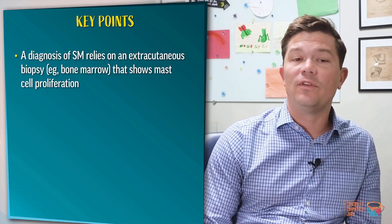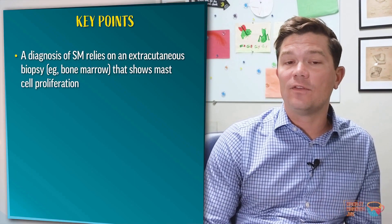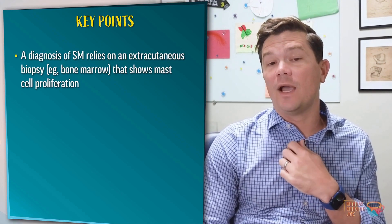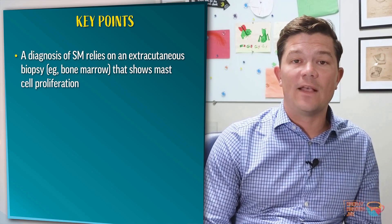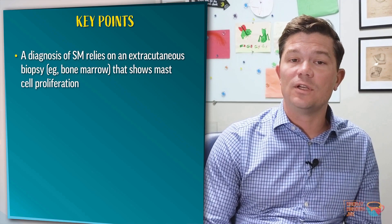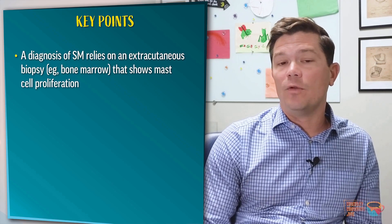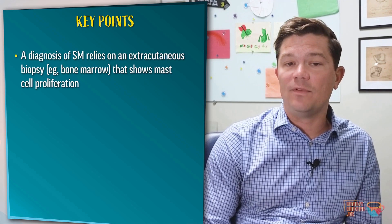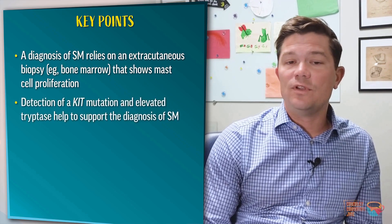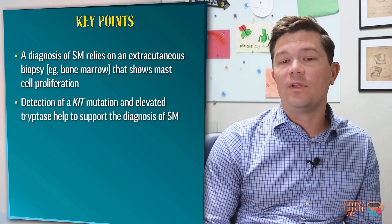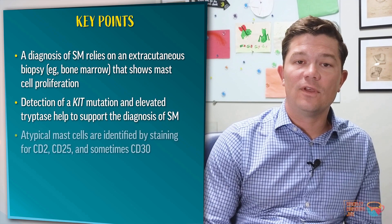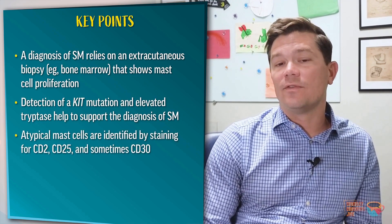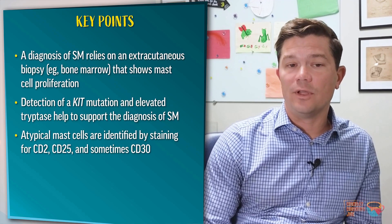Some take-home points: a diagnosis of mastocytosis relies on bone marrow biopsy — or at least a biopsy of an extracutaneous organ showing mast cell proliferation. Bone marrow is the most common site biopsied, but a GI biopsy could work as well. Detection of a KIT mutation and elevated tryptase help to support this diagnosis, and atypical mast cells are identified by staining for CD25, as well as often CD2 and sometimes CD30.